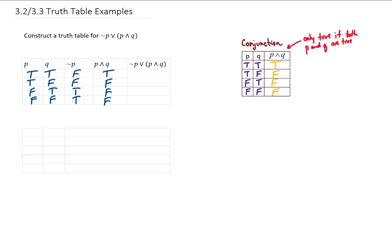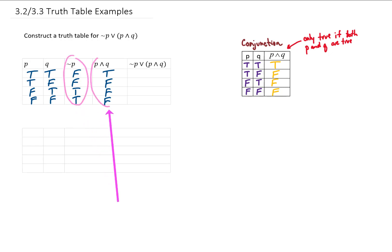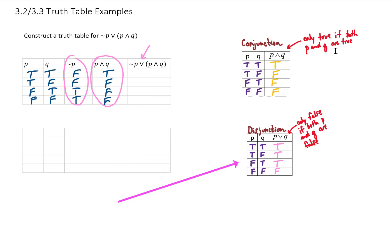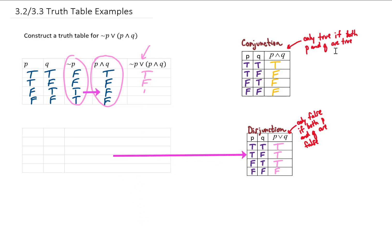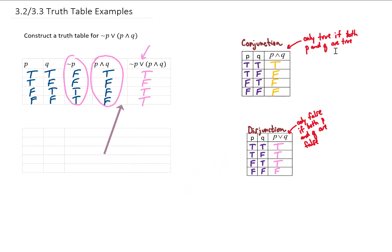Now to fill out our final column, we need to compare our not P values to our P and Q values using this disjunction. Disjunctions are only false if both things we're comparing are false. So comparing the two columns: false and true gives true; false and false gives false; true and false gives true; and true and false gives true. So our answer column for this truth table gives us these results.